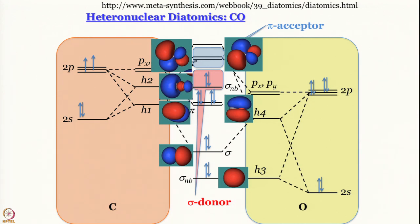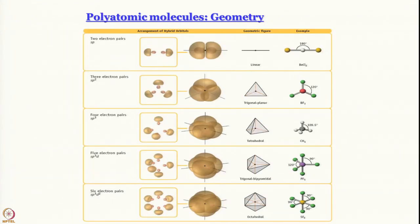That brings us to the end of our discussion of heteronuclear diatomic molecules. In the next class we are going to go back to polyatomic molecules and learn how molecular orbital theory can be used to understand them.